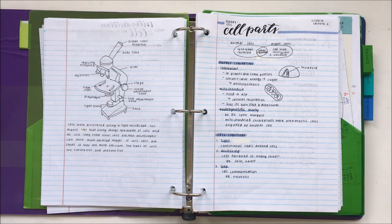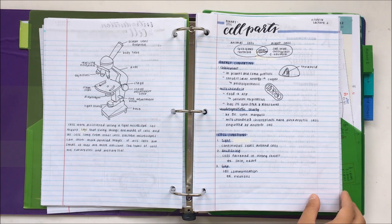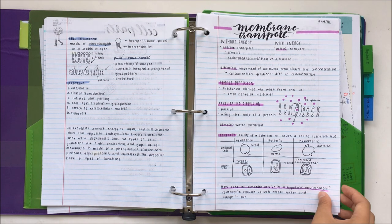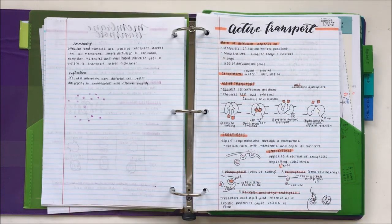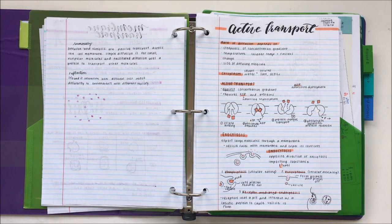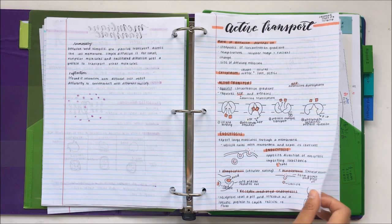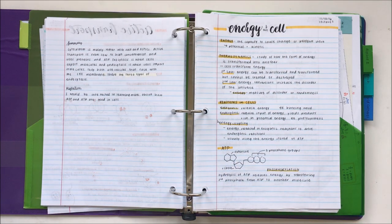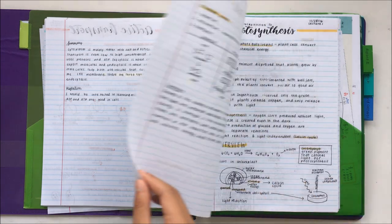And the way I do it is by writing down just the information during the lecture. And then if there's a pause, I'll start adding in highlighting, boxes, little drawings or diagrams. Or if there's no pauses, then I'll finish it up after class. I don't rewrite my biology notes. I personally think it's a waste of time if you rewrite it only to make it look prettier.